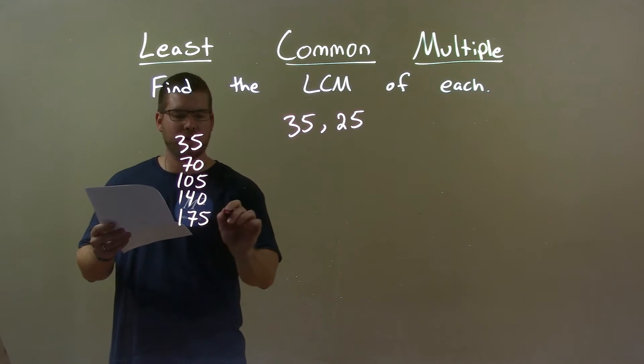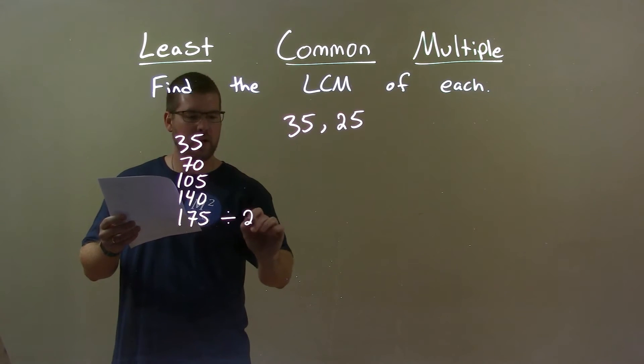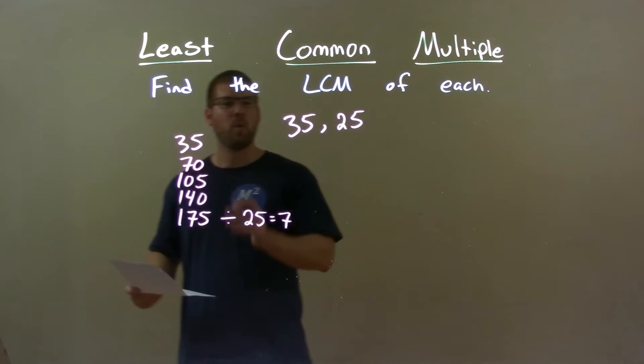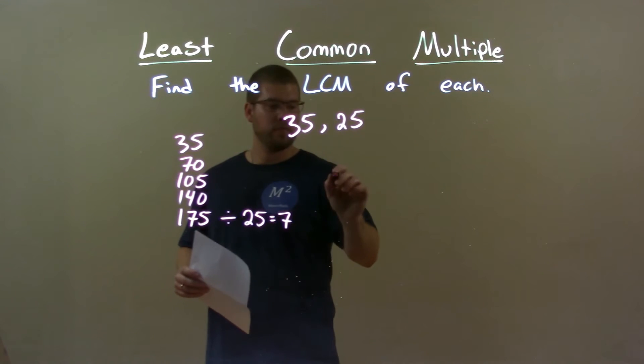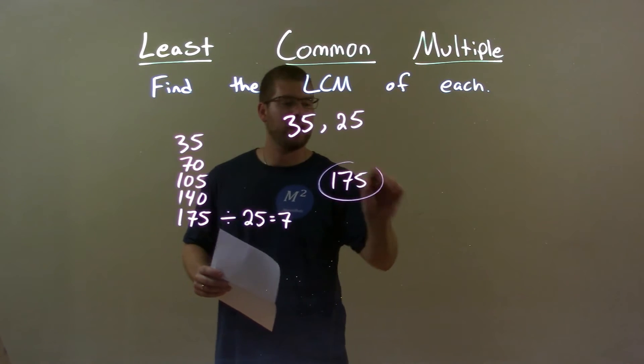But 175 can. 175 divided by 25 is 7. So, 175 was the first one of these multiples that is divisible by 25, and so 175 is my final answer.